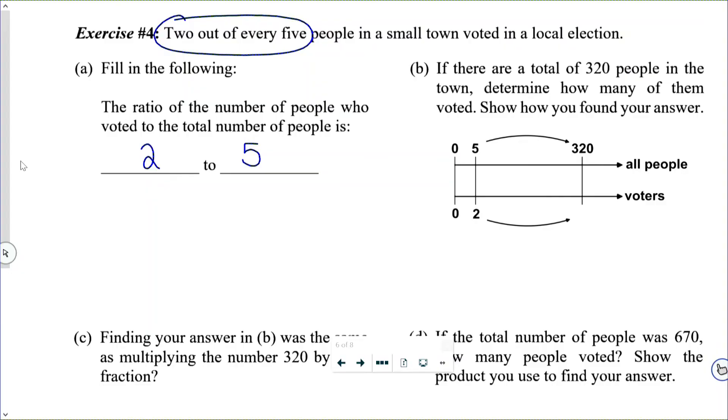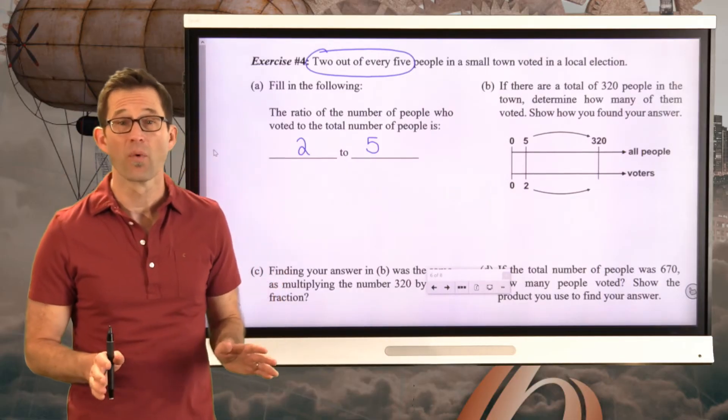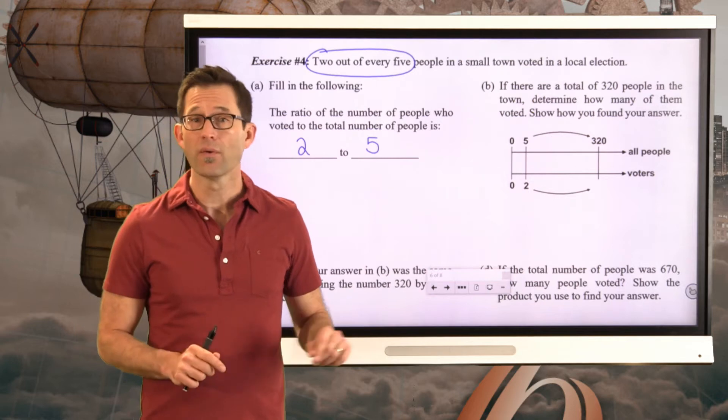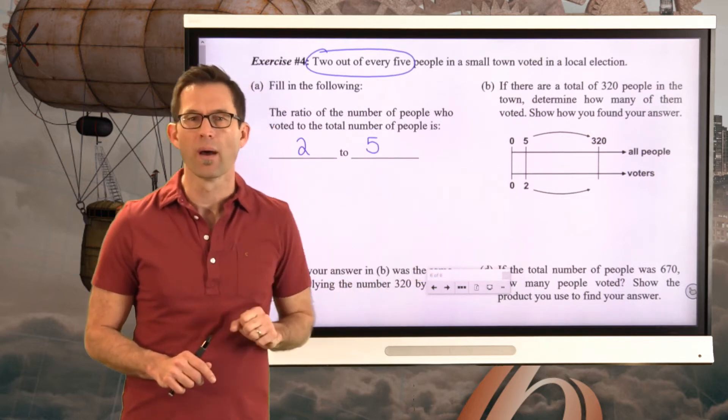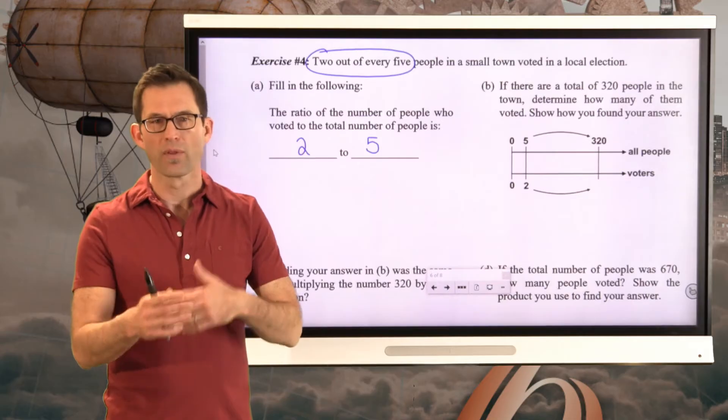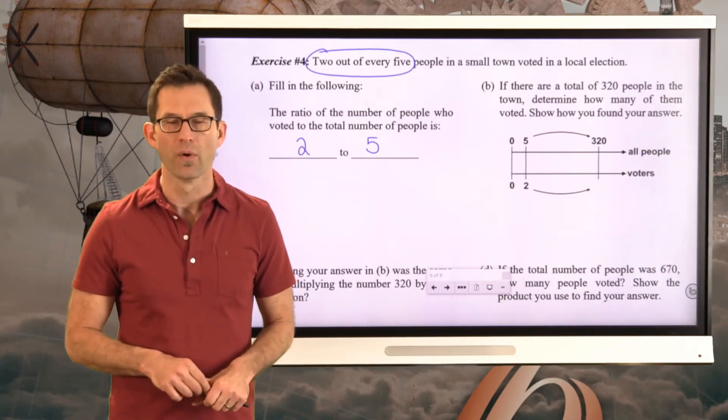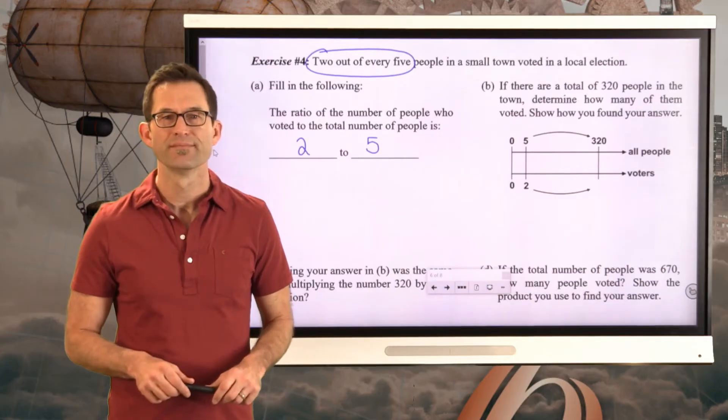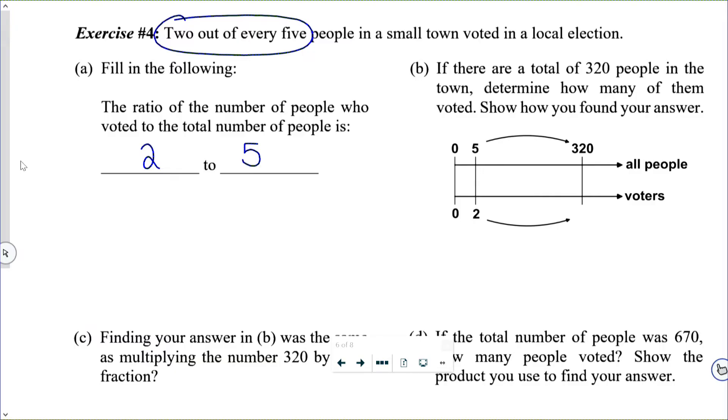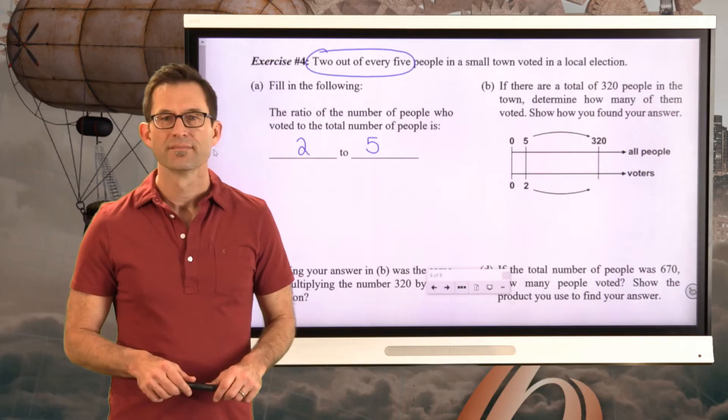Now, letter B. If there are a total of 320 people in town, determine how many of them voted. Show how you found your answer. Well, this is going to take a little bit more work. So I'd like you to pause the video now. I've got this kind of mini double number line here. See if you can use that along with multiplication and division possibly to figure out the number of voters.